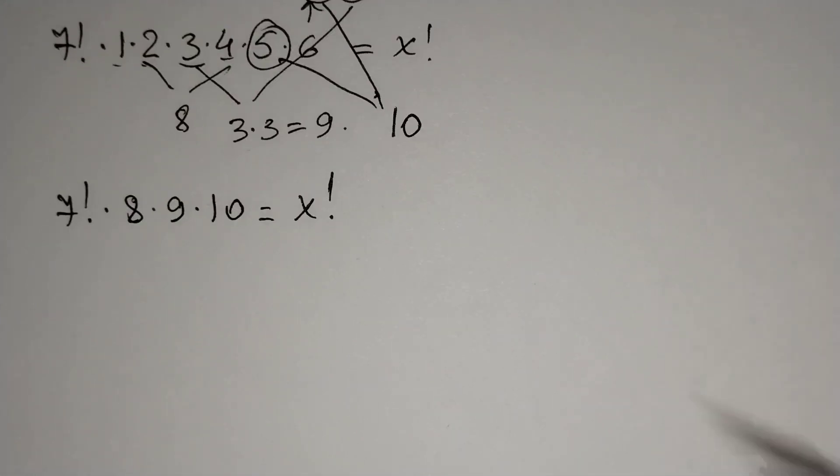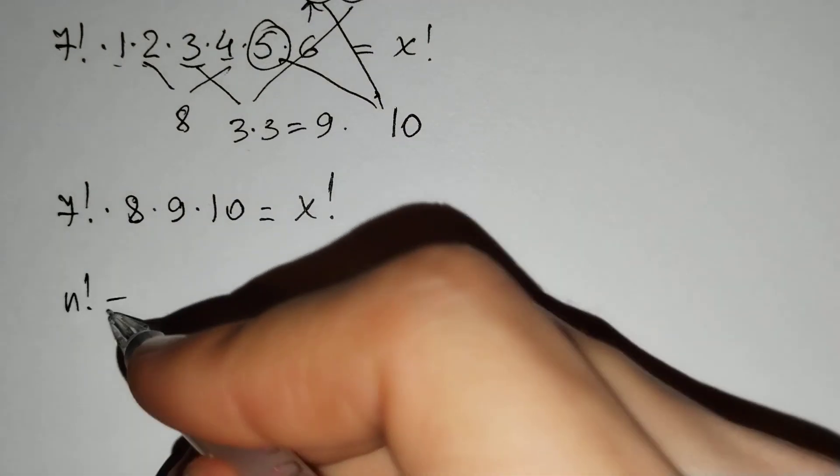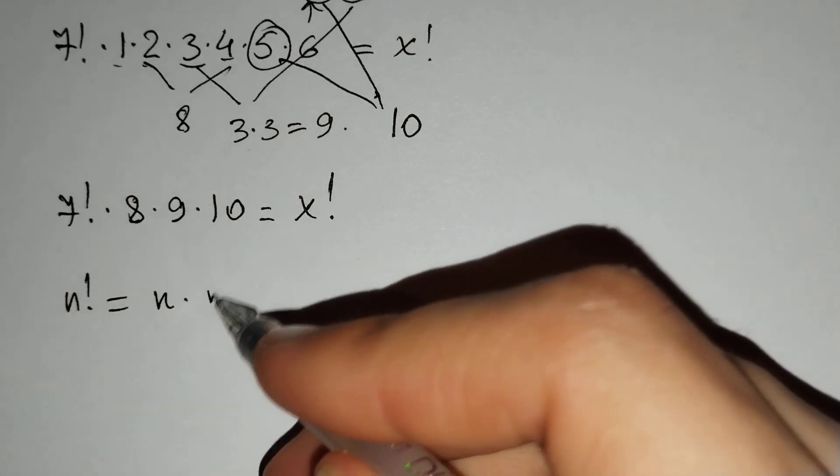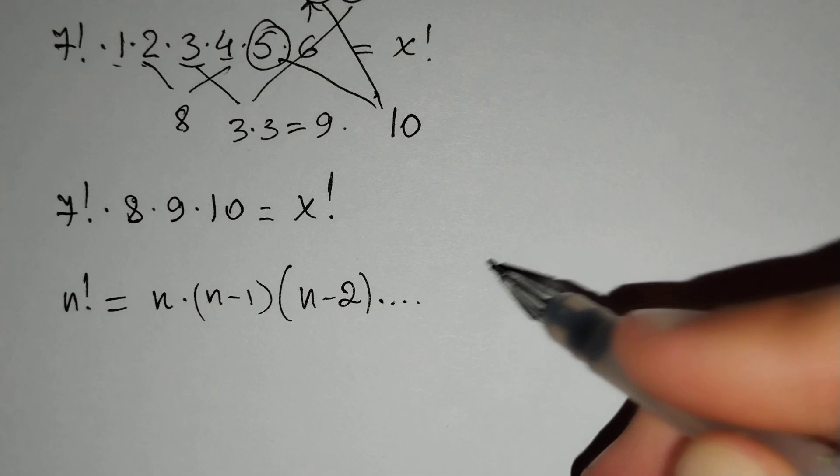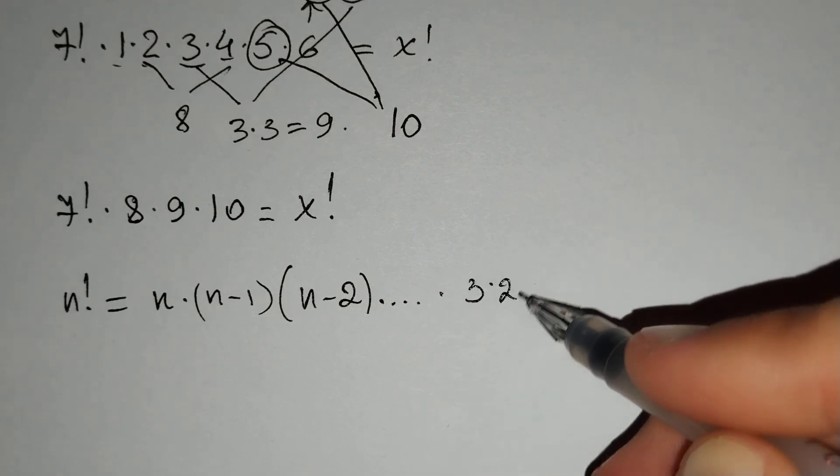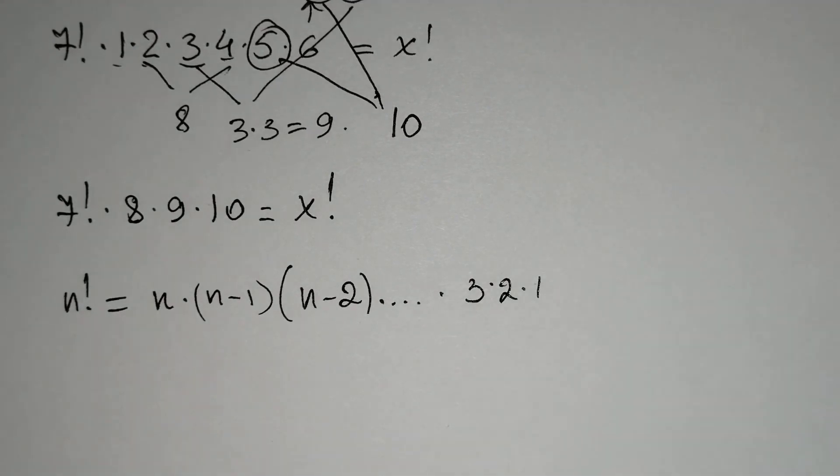And we know that n factorial equals n times n minus 1 times n minus 2, etc., times 3 times 2 times 1.